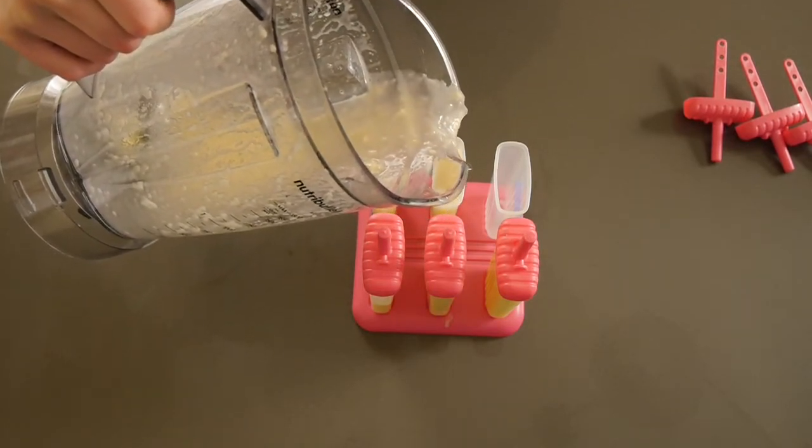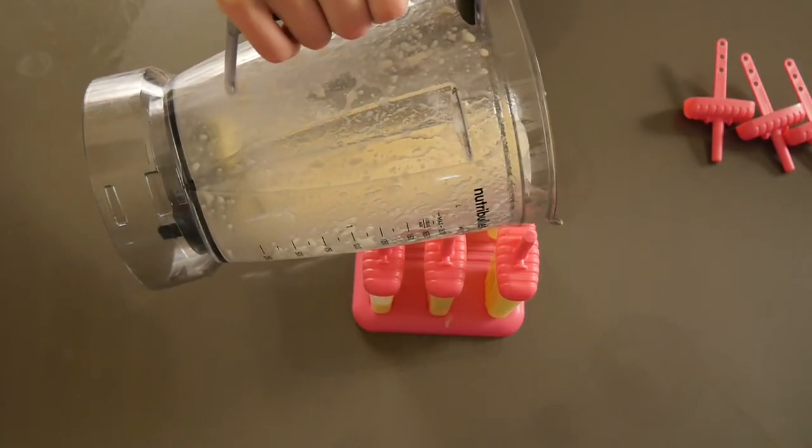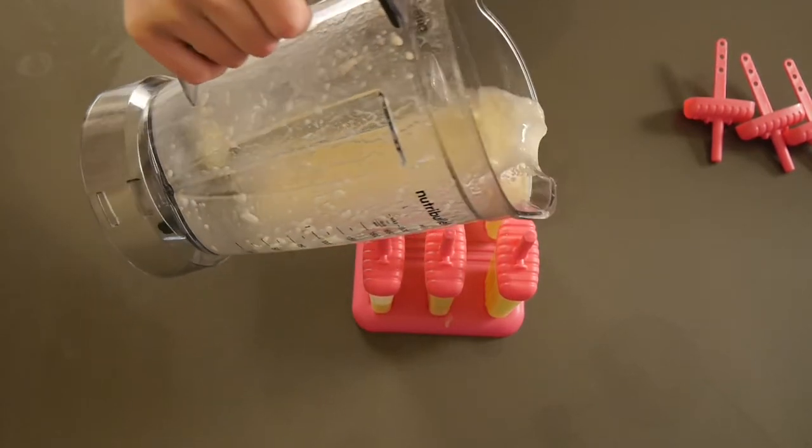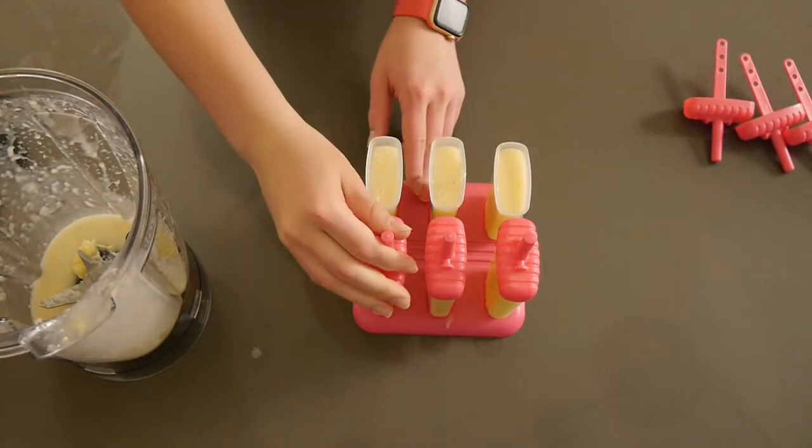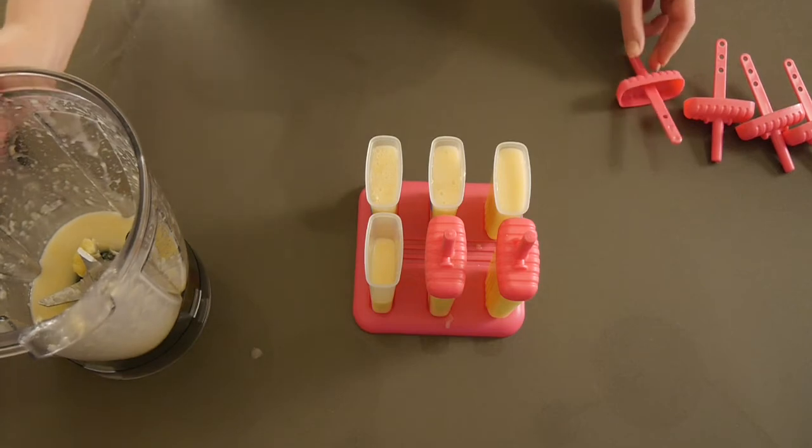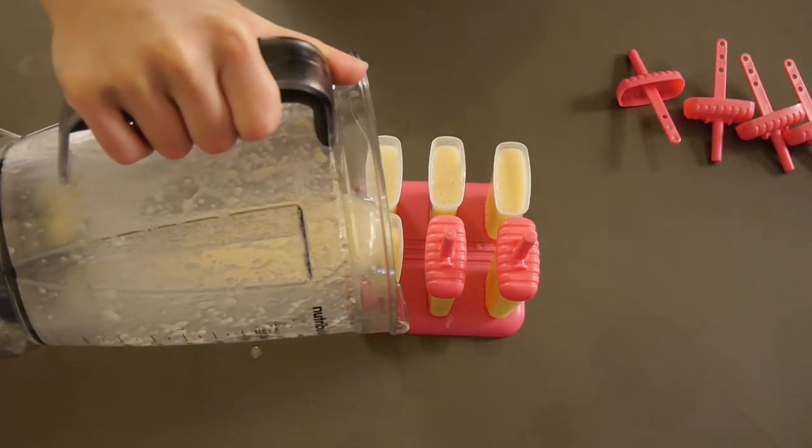I'm doing the exact same thing I did with the non-alcoholic popsicles, just filling the molds up. I ended up with about three and a half, enough mixture for three and a half popsicles. So I just rounded and did four because I didn't want to waste that extra mixture. Then I'm just going ahead sticking the popsicle sticks in.